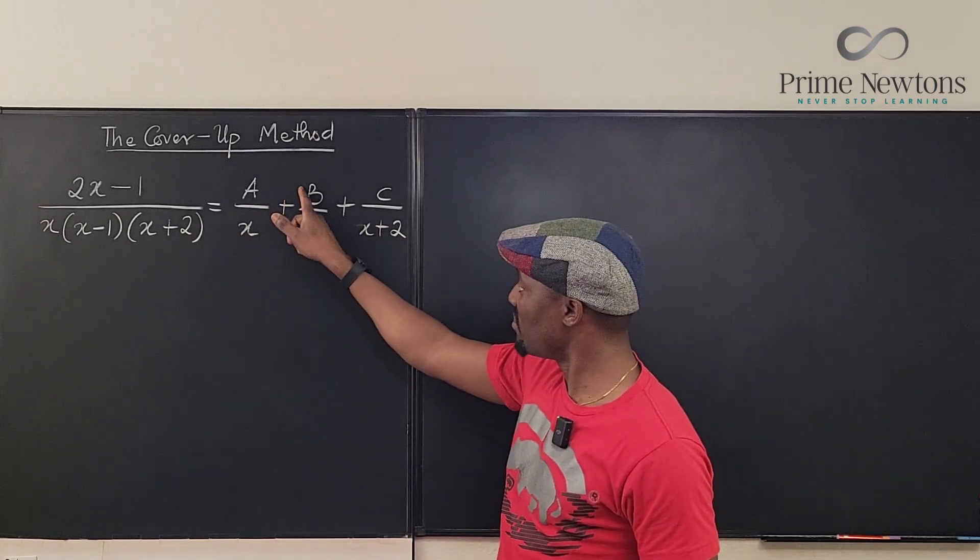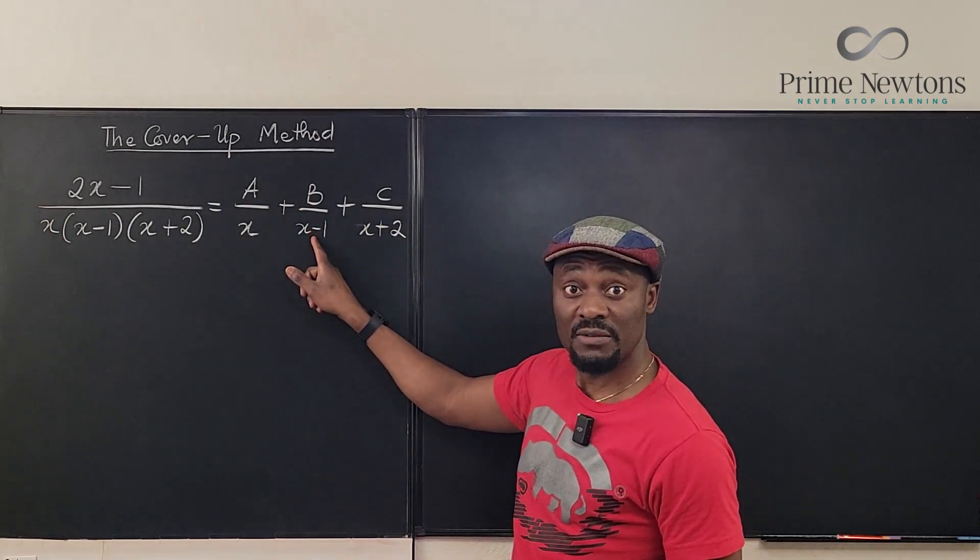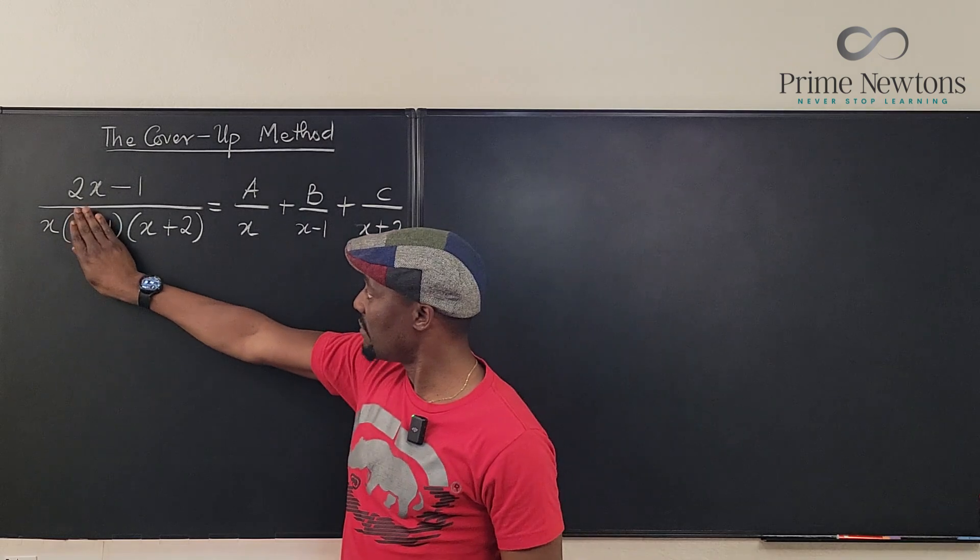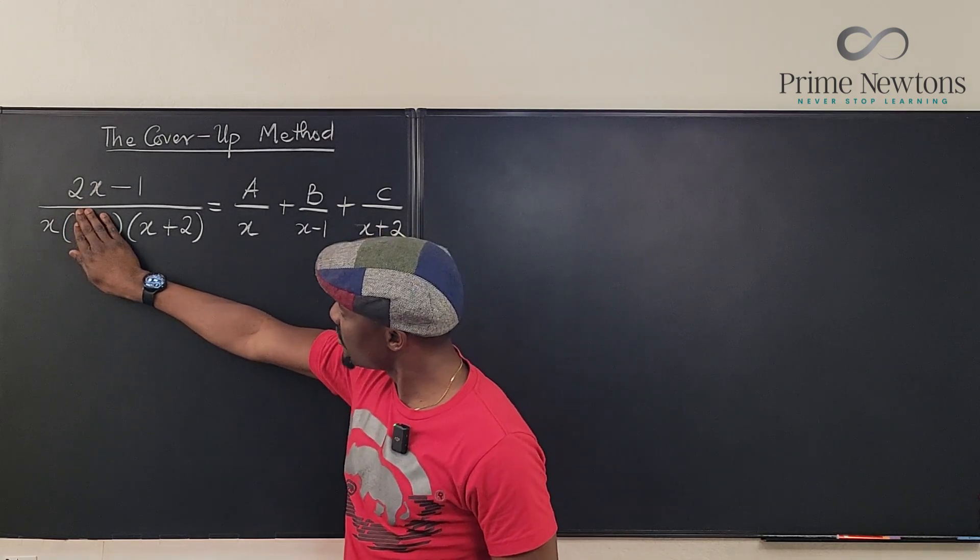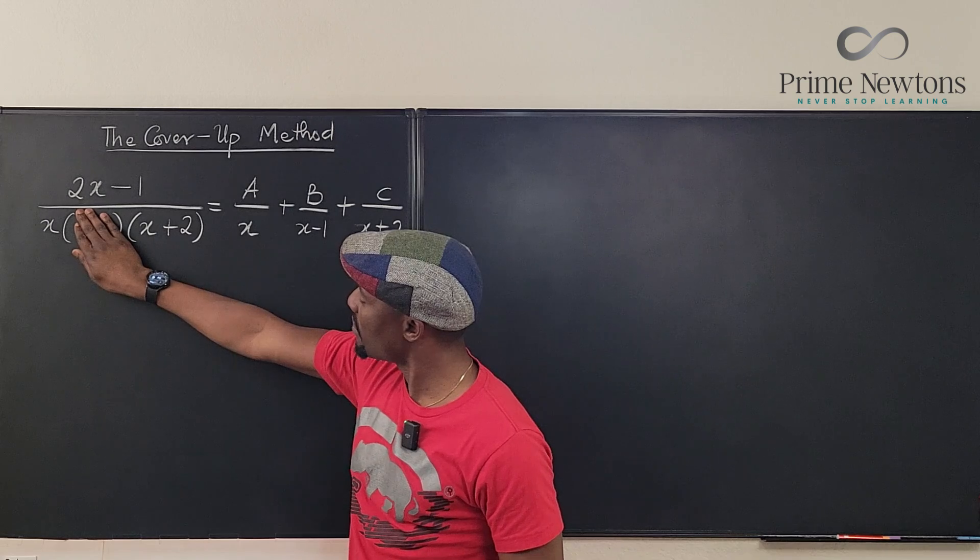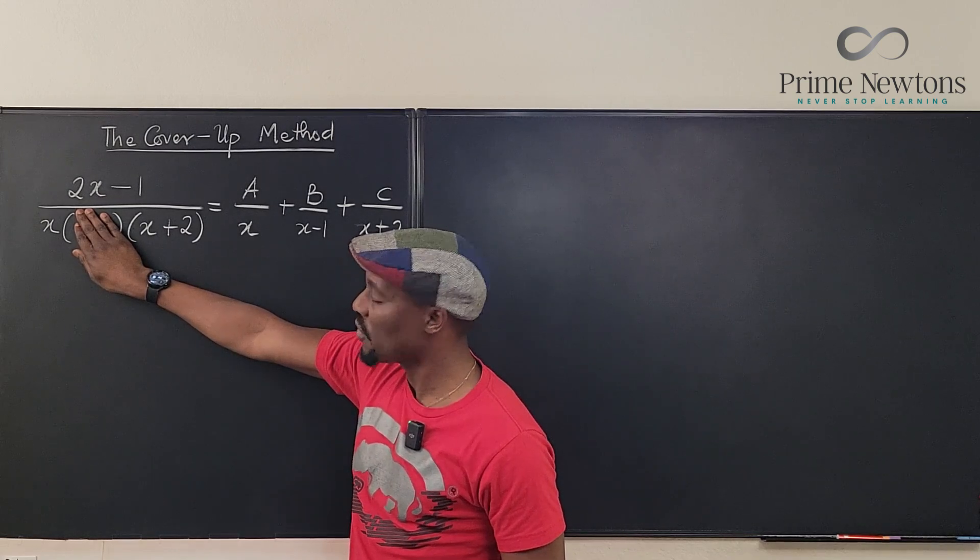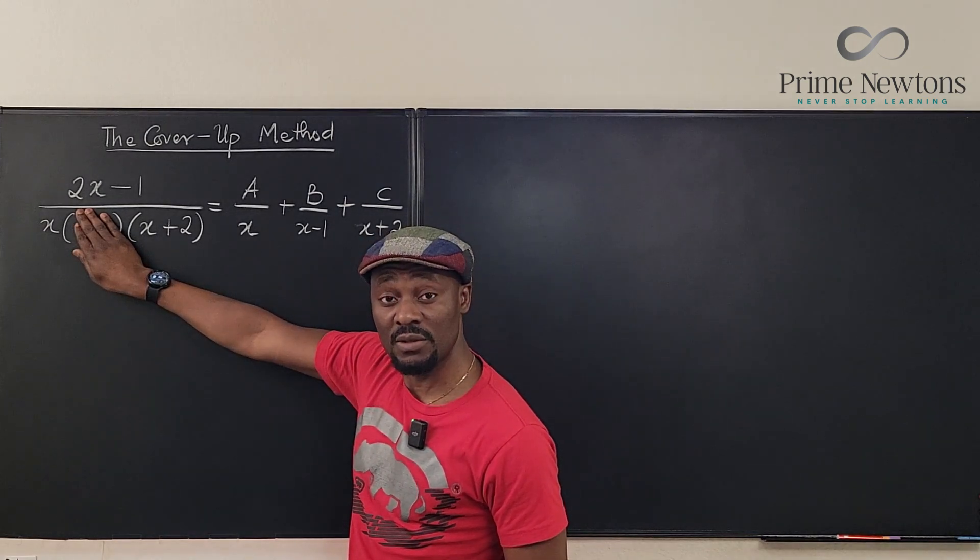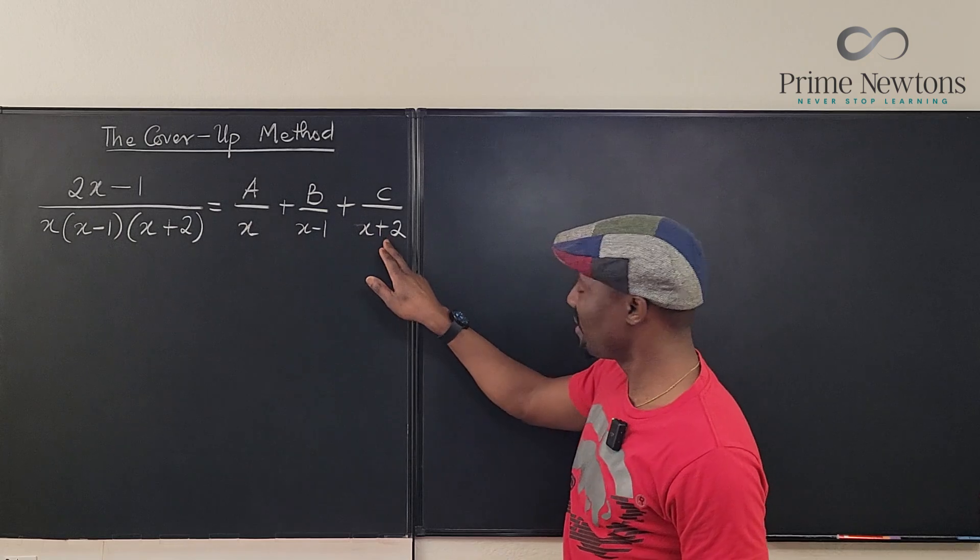And I say I know what B is gonna be because B is on top of x minus one. I cover up this guy and I say it's gonna be one times three in the denominator. And on top it's going to be one. So it's one over three. One third.